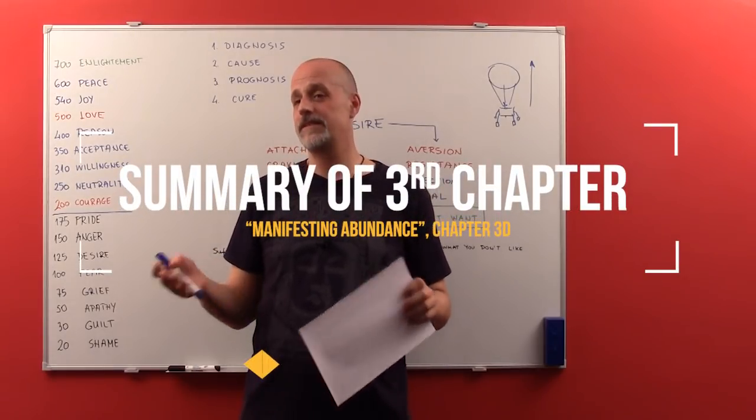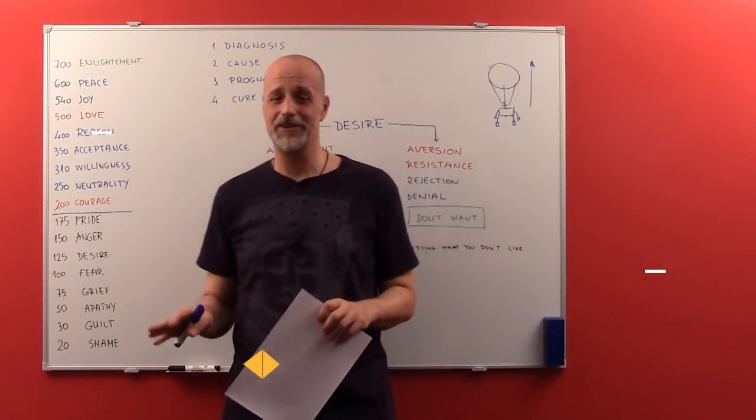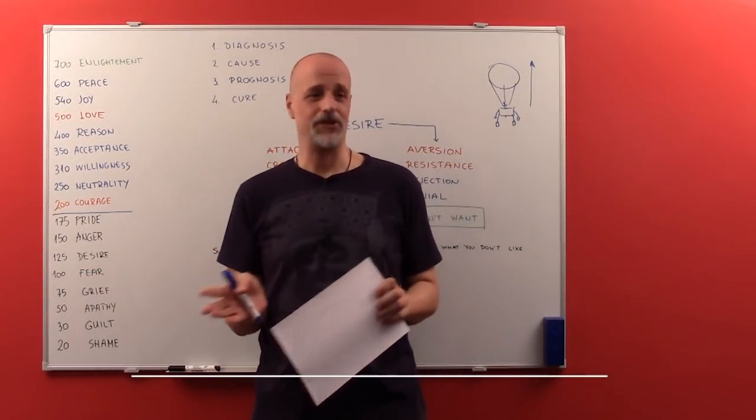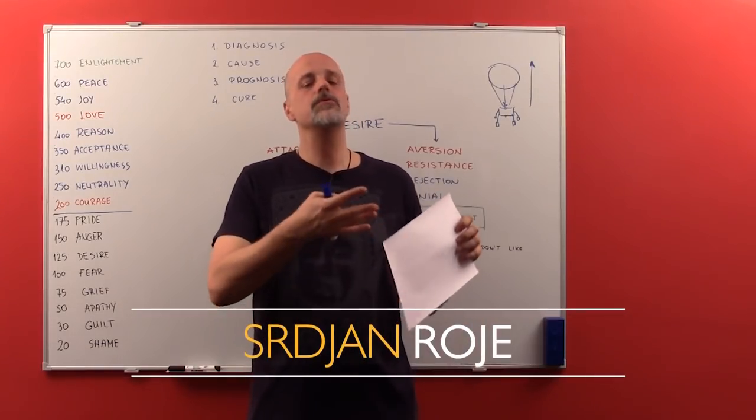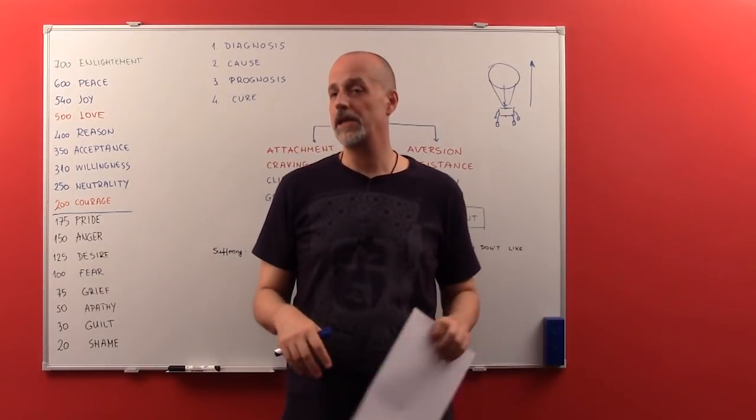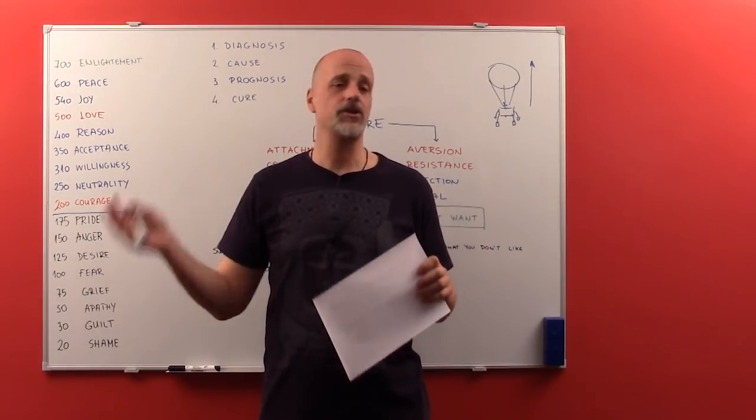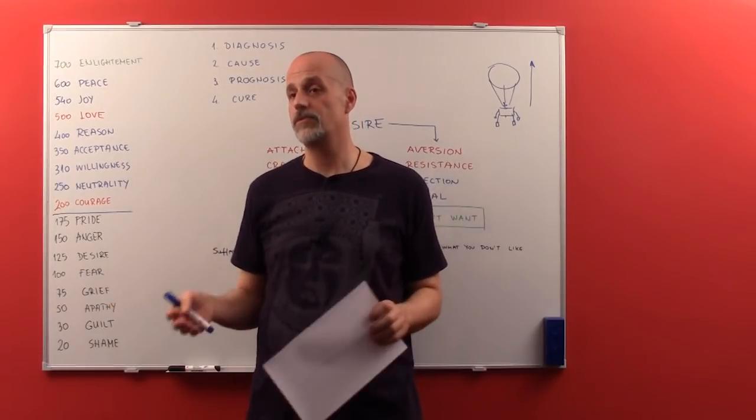So in this chapter, we finally started giving some answers. So far, all we've been doing is shifting questions. We started with the question, what do I really want from my life? Is it really about success or money or reputation or prestige? And we found out that all we want is to be happy.